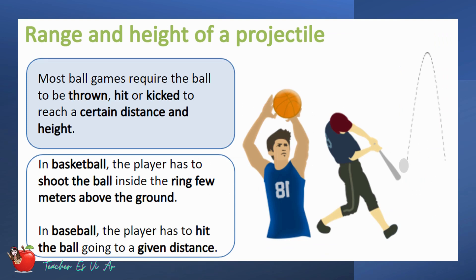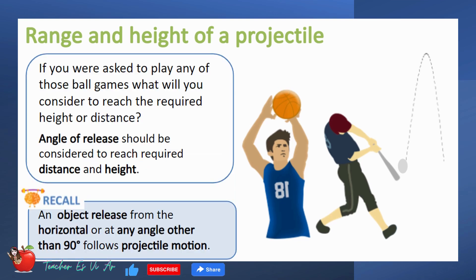Most ball games require the ball to be thrown, hit, or kicked to reach a certain distance and height. For example, in basketball, the player has to shoot the ball inside the ring few meters above the ground. On the other hand, in baseball, the player has to hit the ball going to a given distance. If you were asked to play any of those ball games, what will you consider to reach the required height or distance?